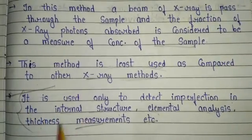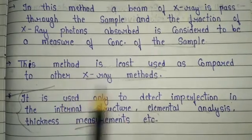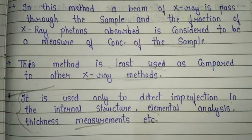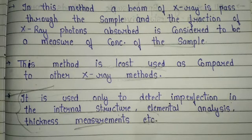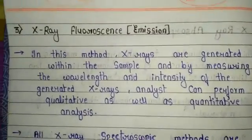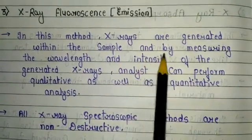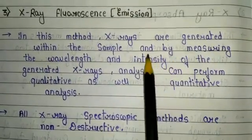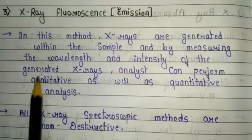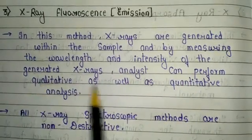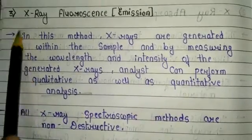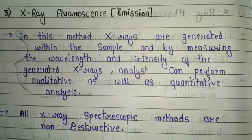These are the important applications — or limitations — of the X-ray absorption method. This is also a very important topic from a semester exam point of view, as questions like 'what is X-ray absorption' can appear individually. The third important category is X-ray fluorescence, also called X-ray emission. In this method, X-rays are generated within the sample, and by measuring the wavelength and intensity of the generated X-rays, an analyst can perform qualitative as well as quantitative analysis.